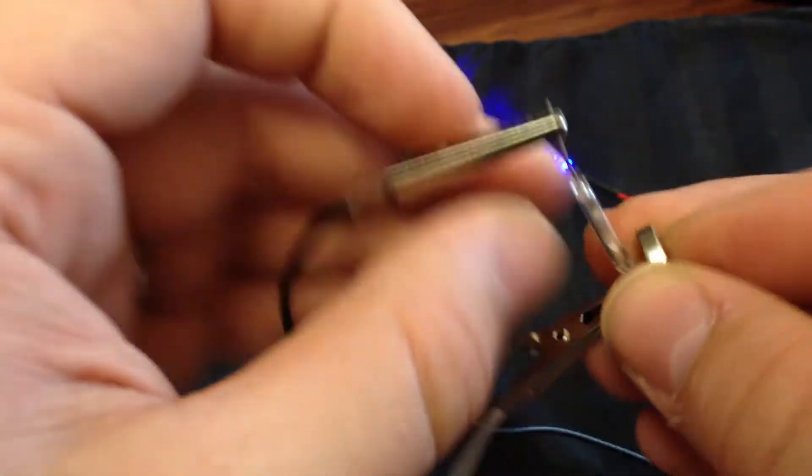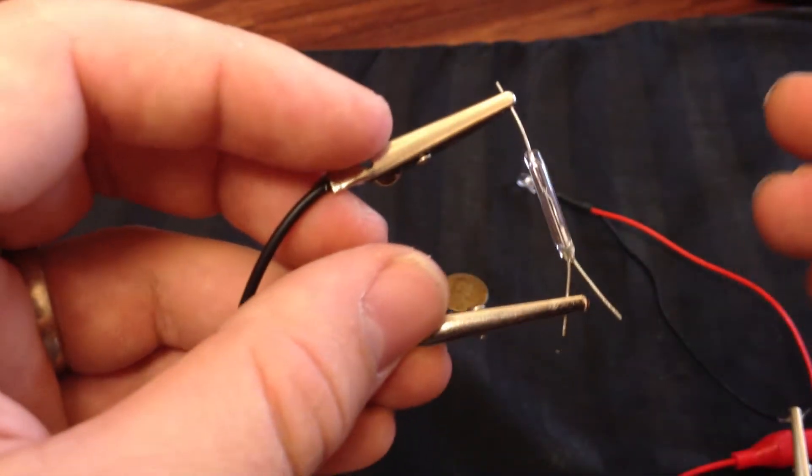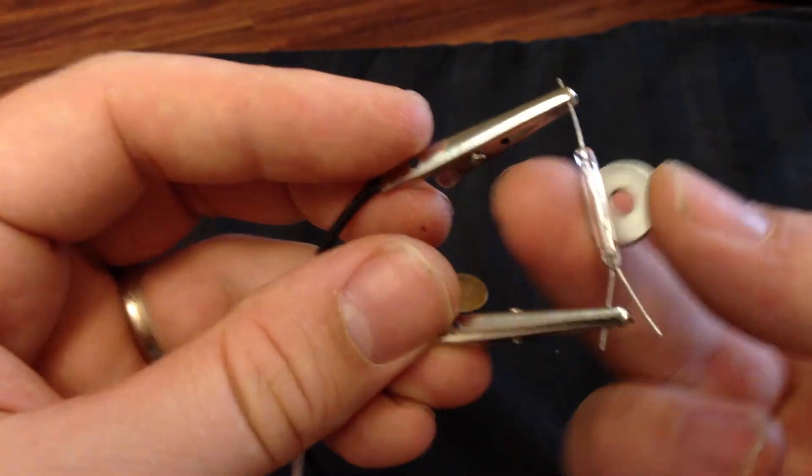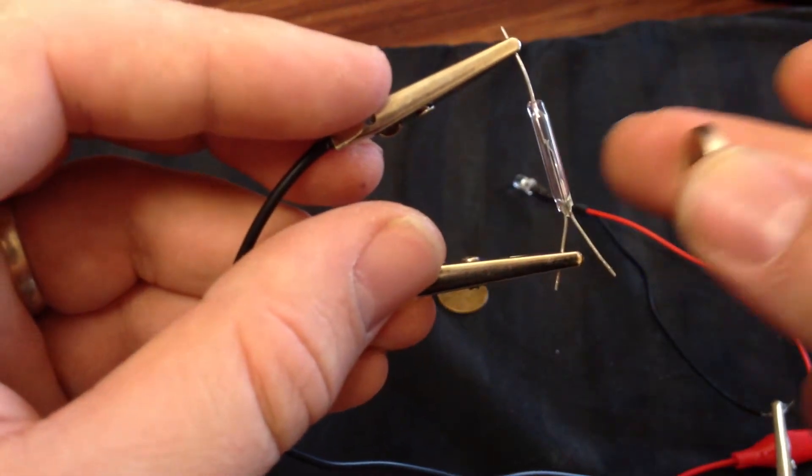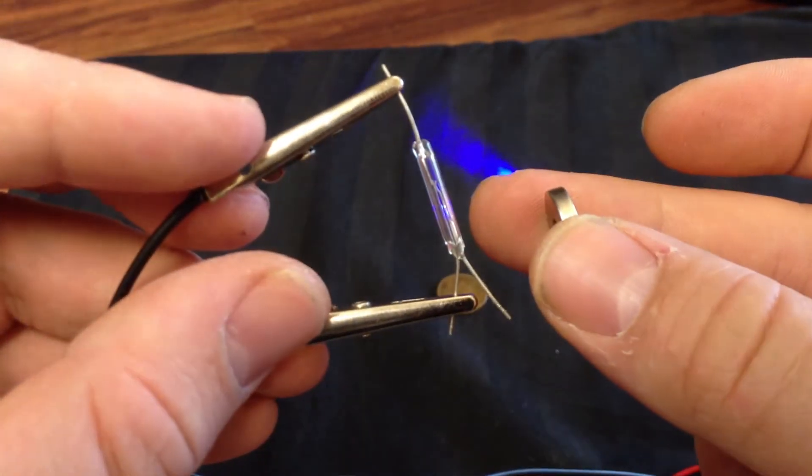So once you find the right polarity, it will work in the right angle too. Because from different sides it works better. It will work from an inch away with a neodymium magnet.